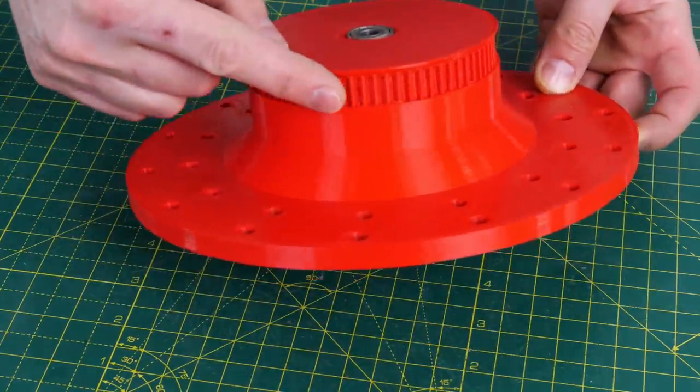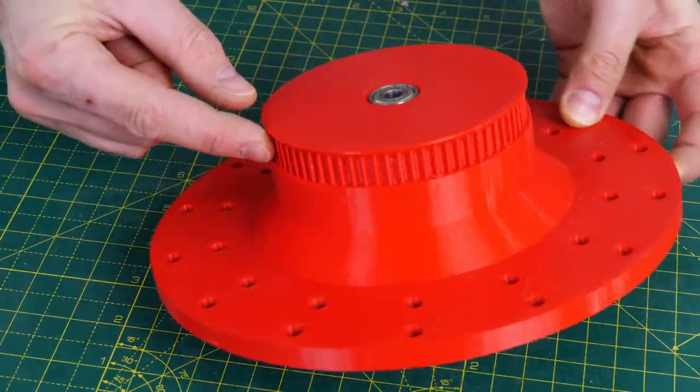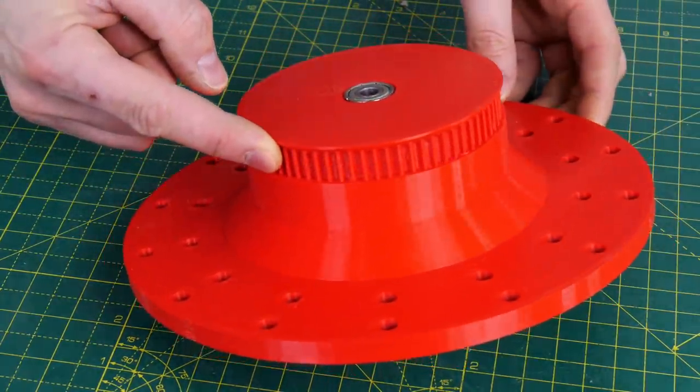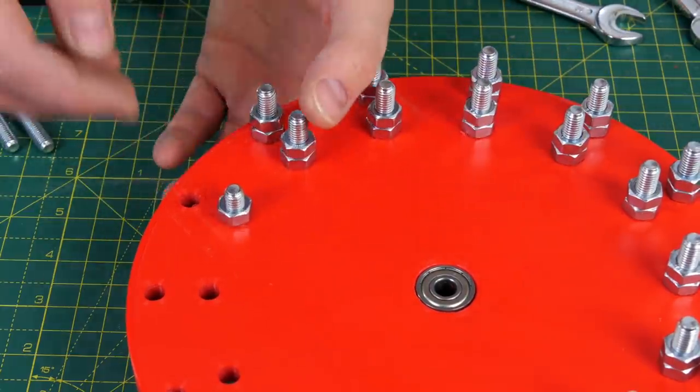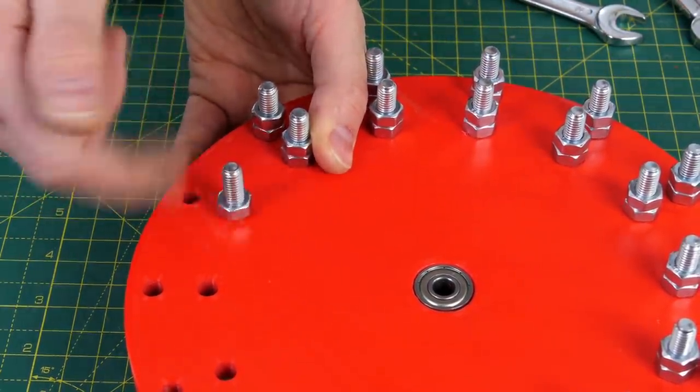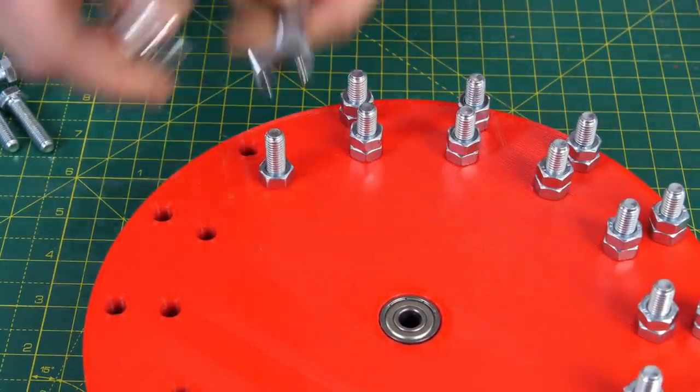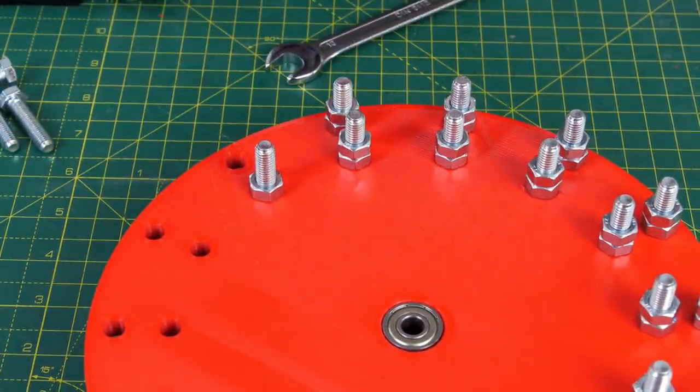The most important part of course is the reaction wheel itself which is a large 3D printed part with a pulley printed into it so we can drive it from a motor. It's going to need more mass though so I've got lots of 8mm bolts which are attached all the way around and I've got two nuts on each one which are done up against each other so that they don't come undone and fly off.